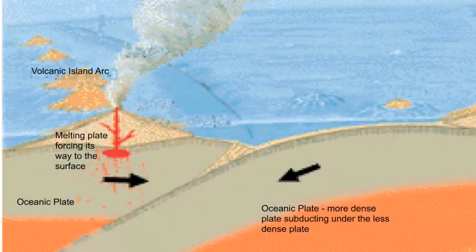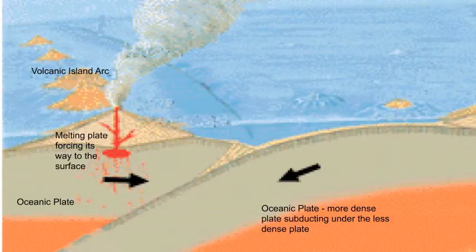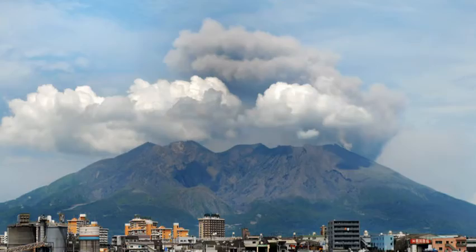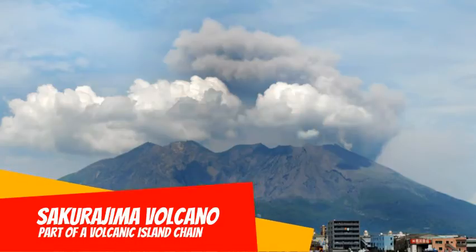When two oceanic plates converge, the same process that forms volcanoes and land occurs. As the melted oceanic plate reaches the surface of the other ocean plate, it cools and creates a small undersea hill. As this process repeats, the hill continues to grow and may break the surface of the ocean, creating a chain of islands along the subduction zone. A great example of this would be the Japanese archipelago.